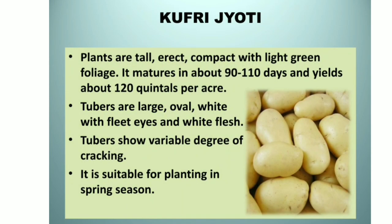Kufri Jyoti: plants are tall, erect and compact with light green foliage. It matures in about 90 to 110 days and yields about 120 quintals per acre. Tubers are large, oval, white with flat eyes and white flesh. It matures in about 100 to 110 days and is suitable for planting in the spring season.